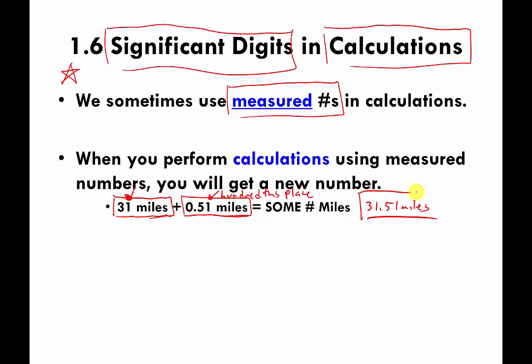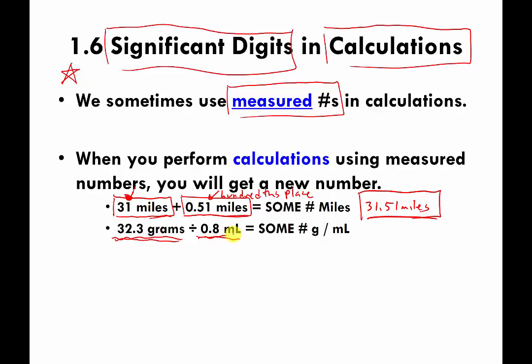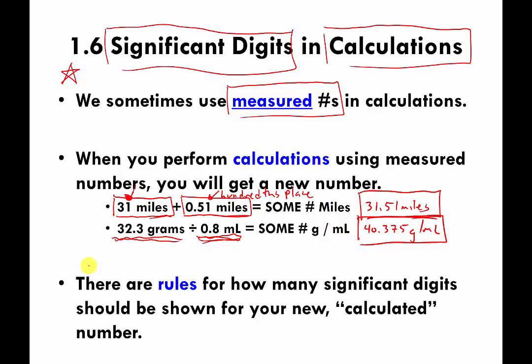So the answer isn't going to be 31.51 miles — I'll explain what it is in a moment. The same holds true when you're multiplying or dividing measured numbers. If I have 32.3 grams divided by 0.8 milliliters, you might think the answer is 40.375 grams per milliliter. There are rules for multiplying and dividing measured numbers and rounding your answer to the correct number of digits. The idea is to prevent you from overstating how precise your final measurement was.